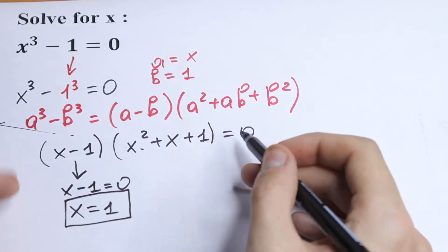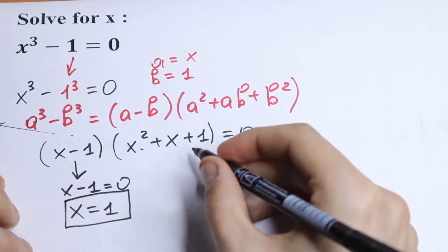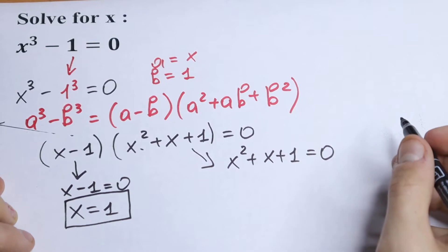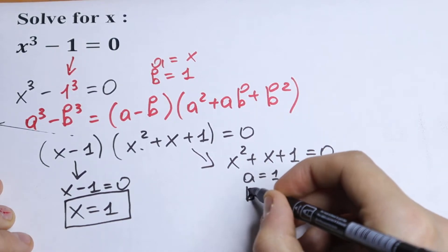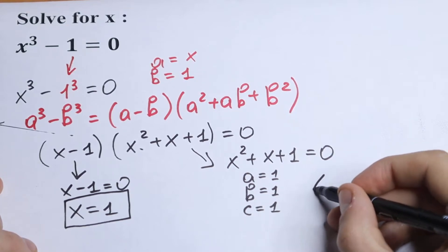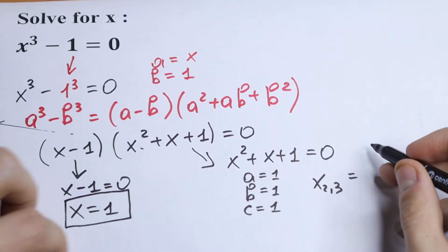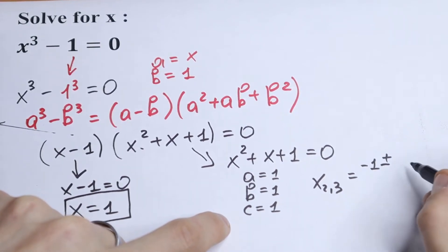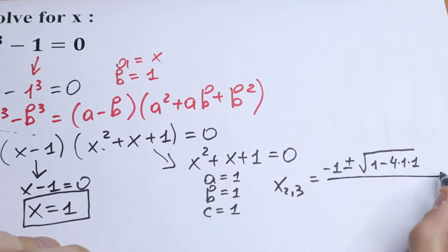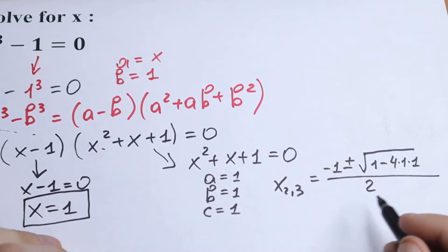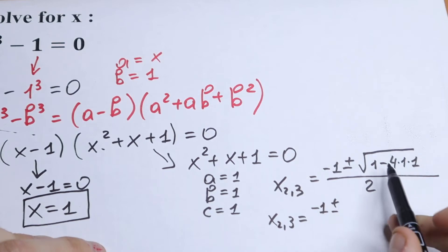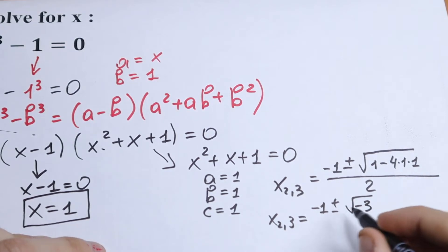Now let's find the other roots — maybe complex roots or more real roots. From the second factor, x squared plus x plus 1 equals 0, with a equal to 1, b equal to 1, and c equal to 1. Applying the quadratic formula gives x₂ and x₃ equal to minus 1 plus or minus the square root of (1 minus 4) over 2, which simplifies to minus 1 plus or minus the square root of negative 3, over 2.